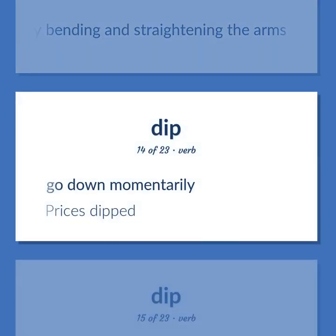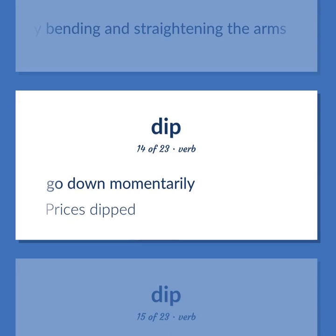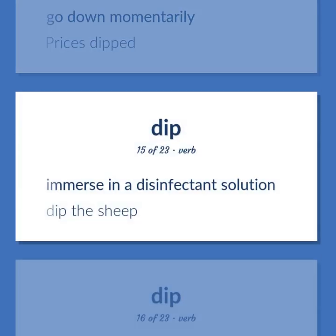A gymnastic exercise on the parallel bars in which the body is lowered and raised by bending and straightening the arms. Go down momentarily — prices dipped. Immerse in a disinfectant solution — dip the sheep.